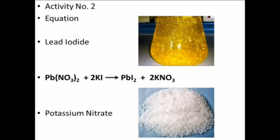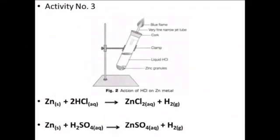The equation is Pb(NO3)2 + 2KI gives PbI2 + 2KNO3. Activity number 3: Take zinc granules in a conical flask or a test tube, add dilute hydrochloric acid or sulfuric acid to it. On the reaction between these two, dihydrogen gas is produced. What do you observe when you touch the conical flask or test tube? The temperature of the conical flask or test tube increases.